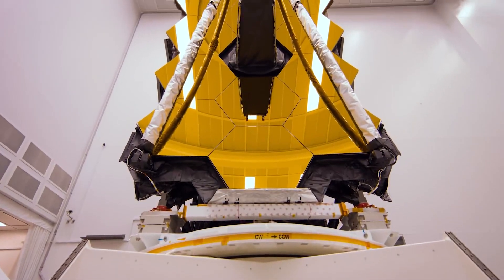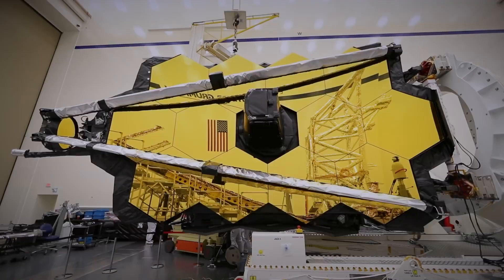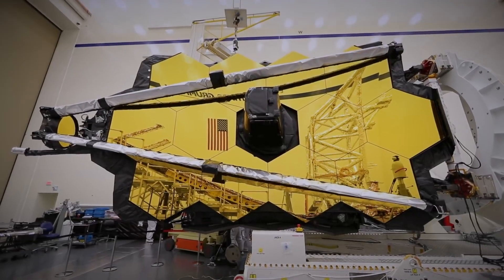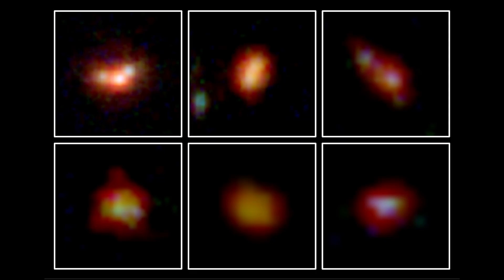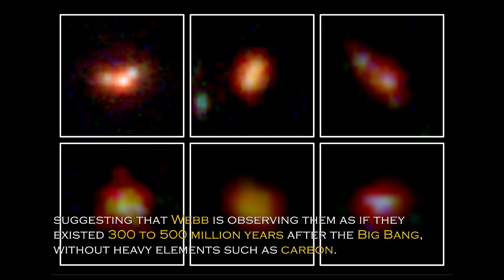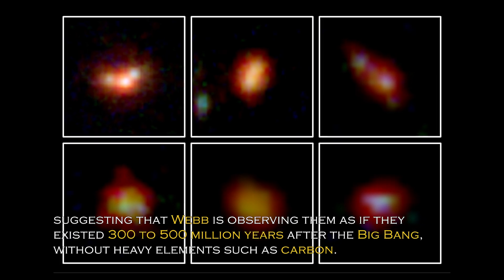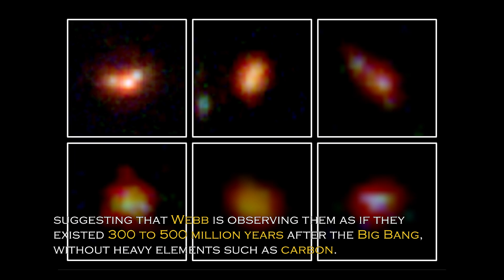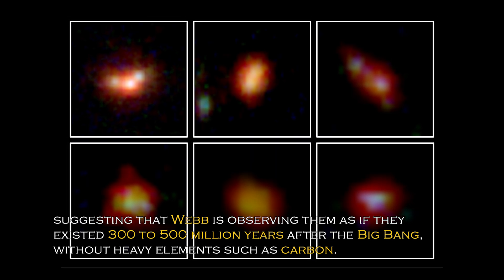Data obtained from Webb's spectrometer and near-infrared camera have revealed that four of the six primordial galaxies have extreme red shifts, suggesting that Webb is observing them as if they existed 300 to 5 billion years after the Big Bang, without heavy elements such as carbon.